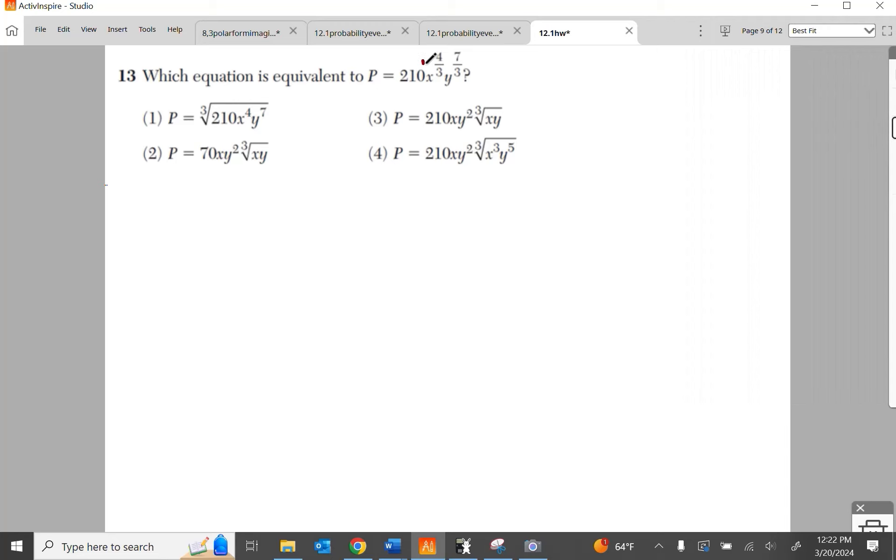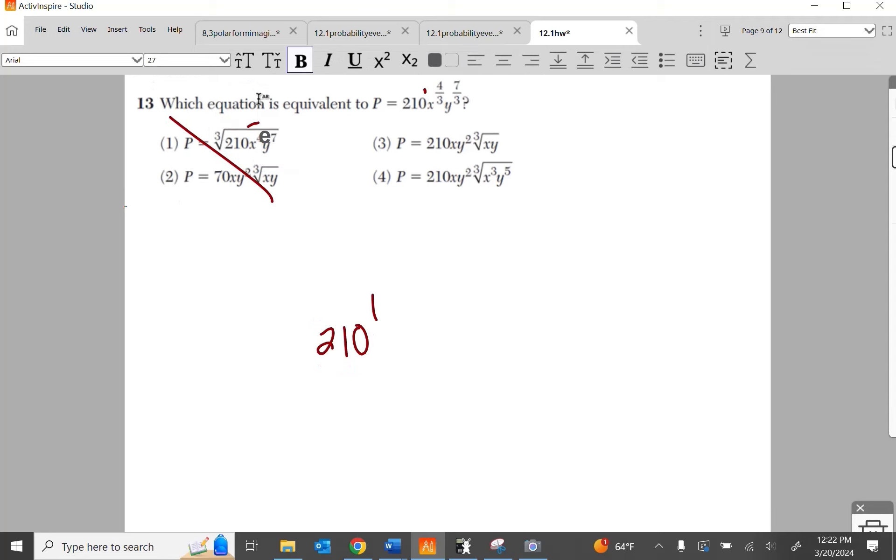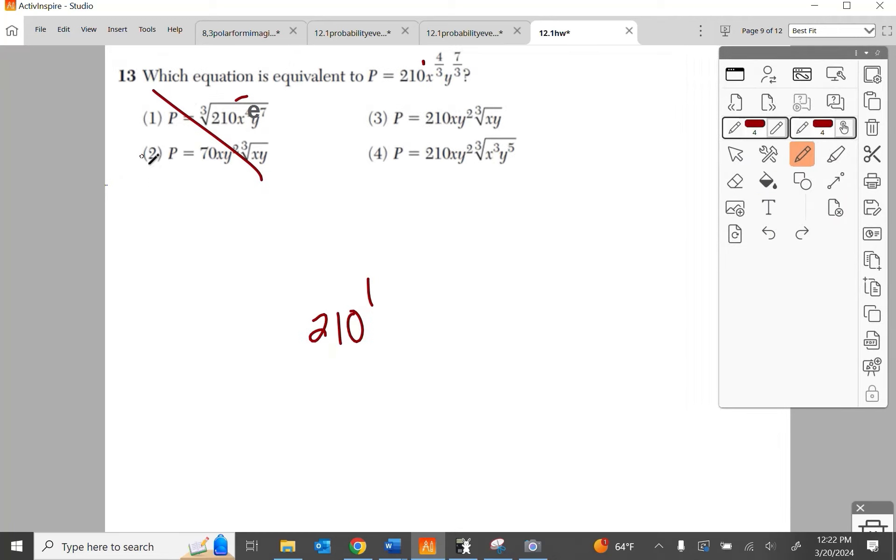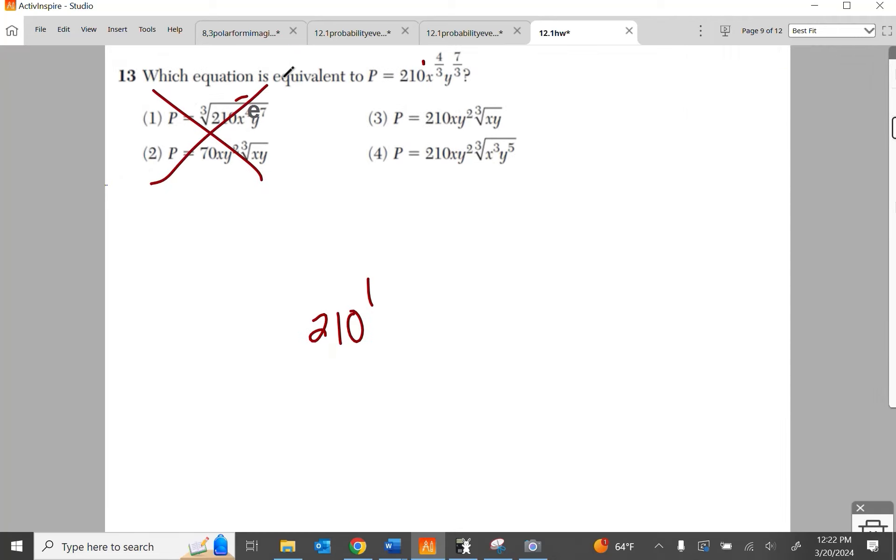Anyways, where's my little pen at? This 210 has an understood exponent of 1. It's 210 to the first. These are not their answers. Plain and simple. Those guys don't work because 210 should be on the outside.